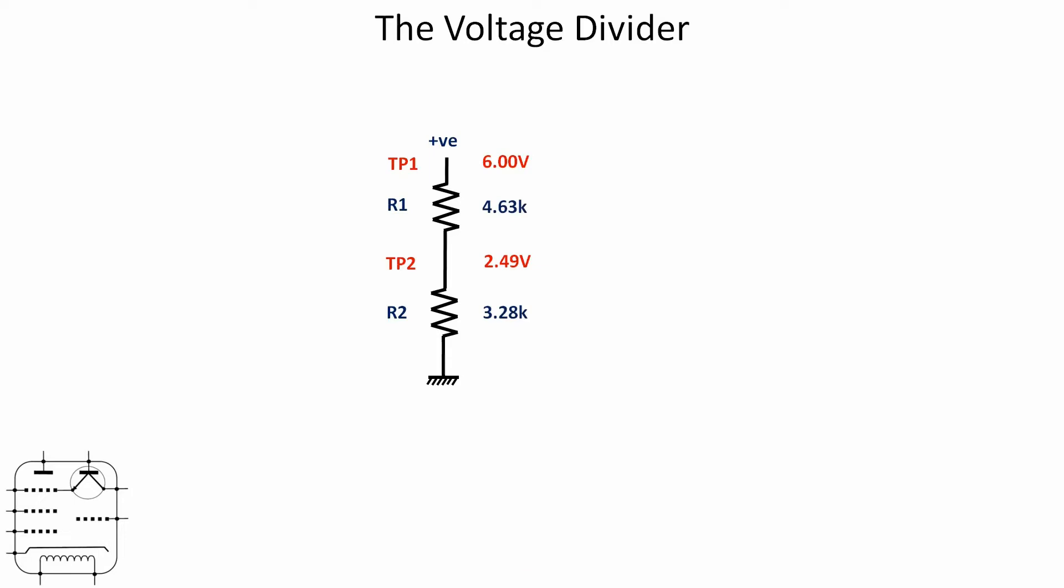It'll come as no surprise, most of you probably already know this, that all of that is mathematically related. The voltage out at test point two is equal to R2 times the voltage in divided by R1 plus R2. Let's calculate what we think the voltage should be from the two resistor values. We've got 3280 times six divided by 4630 plus 3280, remembering BODMAS to get the answer to come out correctly. That should give us an answer of 2.487, or 2.49 volts. So yes, the maths works.